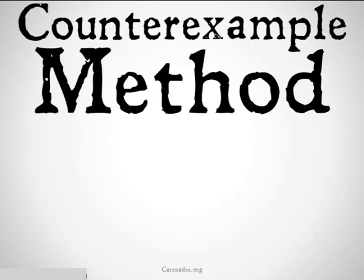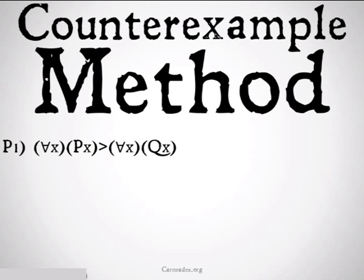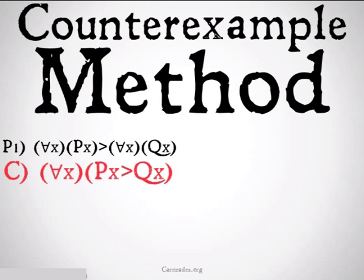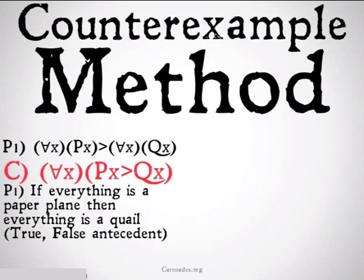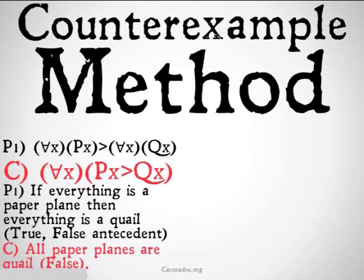The counterexample method we've actually already seen an example of, if you checked out the previous video on conditional and indirect proofs. In that video, I had the following invalid argument: for all x, P(x) implies Q(x). I plugged in 'paper plane' for P and 'quail' for Q and showed that the premise can be true but the conclusion can be false. Even though 'if everything is a paper plane, then everything is a quail' is going to be true because the antecedent is false, the conclusion 'all paper planes are quail' is false. This is a counterexample to the argument.